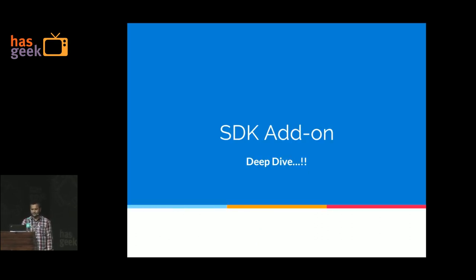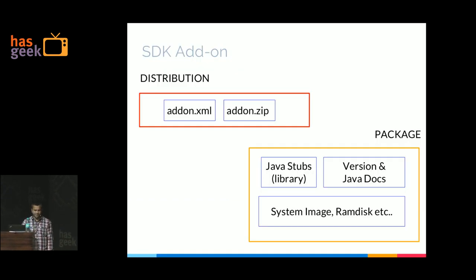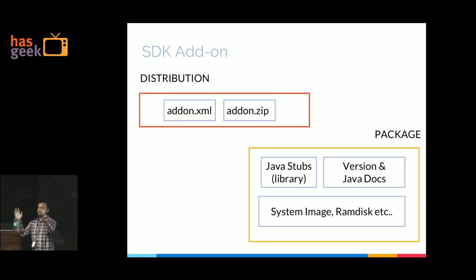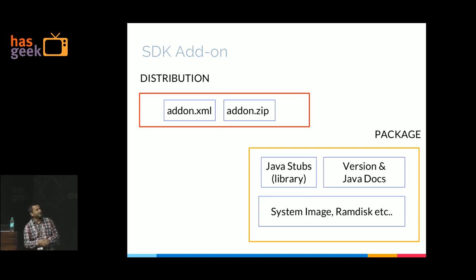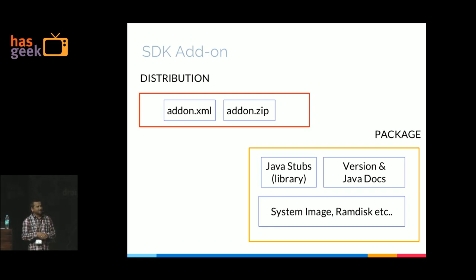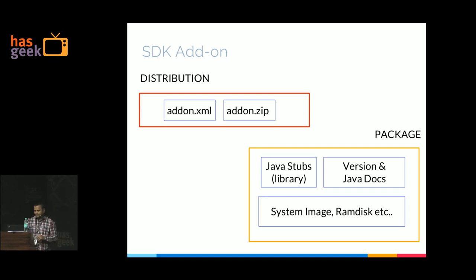An SDK add-on consists of two things: distribution and the actual package. The distribution is just an XML file describing what is in the package — which API version to use, what libraries and documentation are included, licensing, and so on. The actual package contains the libraries, Javadocs, and optionally a system image. There are also stubs, which I'll go into in more depth shortly.